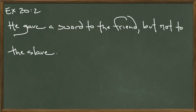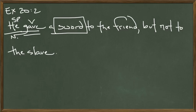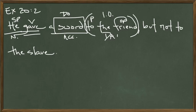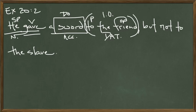Let's do another one. The other part of the email was about this sentence: 'He gave a sword to the friend, but not to the slave.' The student was really perplexed — how do you diagram this? Let's parse it first. 'He' is the subject of the sentence — a subject pronoun, nominative case. What did he do? He gave — that's the verb; I always double underline the verbs. What did he give? He gave 'a sword' — direct object, accusative case. 'To' is a preposition setting off a prepositional phrase; 'to the friend' is the phrase; 'friend' is the object of the preposition. The friend is getting the sword, so the friend is the indirect object, and this whole prepositional phrase goes into the dative case.